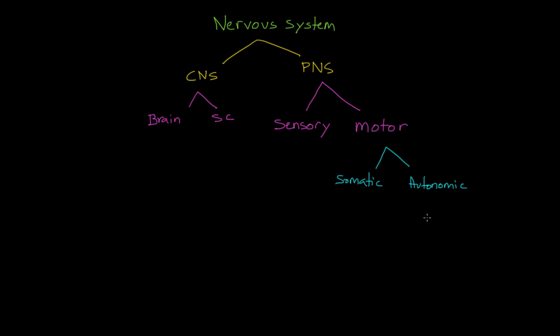The autonomic nervous system itself can be broken down into two parts. One is the sympathetic nervous system, the other is the parasympathetic nervous system.